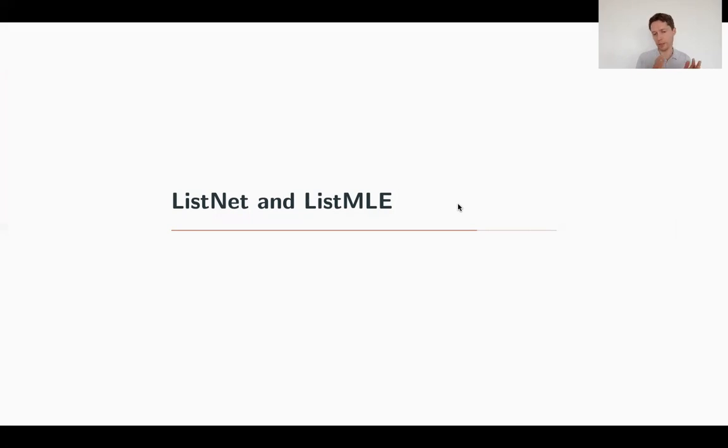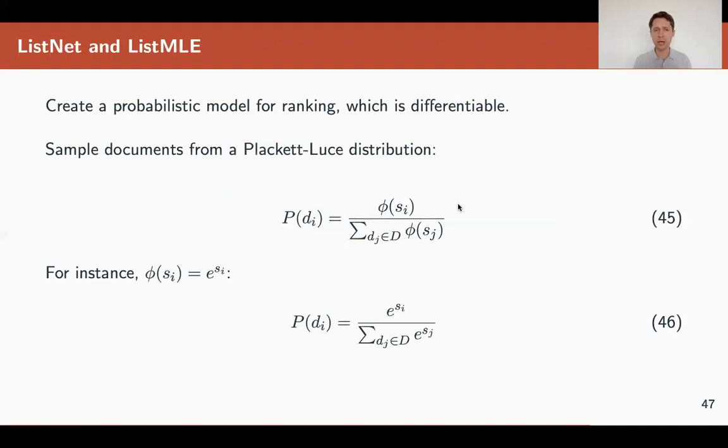But the idea is exactly the same as LambdaRank. So basically, if you implement LambdaRank, you can easily move to LambdaMART. So ListNet and List Maximum Likelihood Estimation, they try to still go theoretical. So they try to create models that are differentiable.